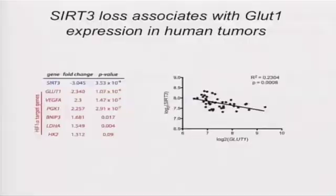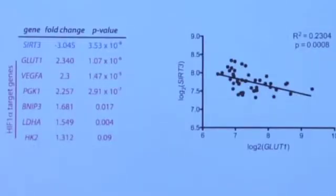We are still trying to understand how important the relationship between SIRT3 and HIF1-alpha is in human cancer, and that's an area we're starting to investigate now. But in these human breast tumors, there is a strong inverse correlation between SIRT3 and glycolytic gene expression: the higher the SIRT3 expression in the human tumor, the lower the GLUT1 expression, and the reverse is true.